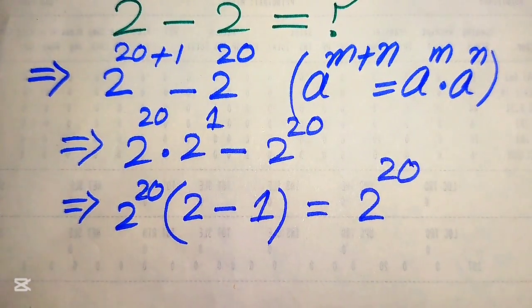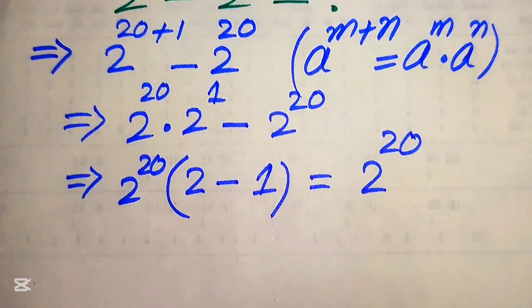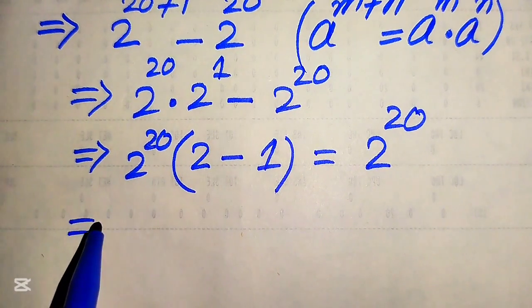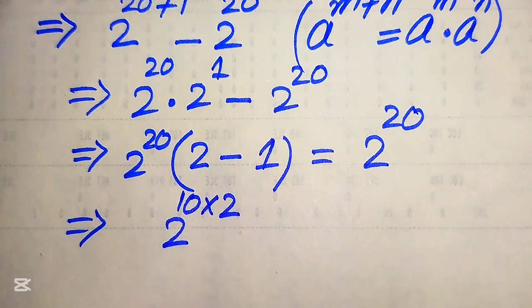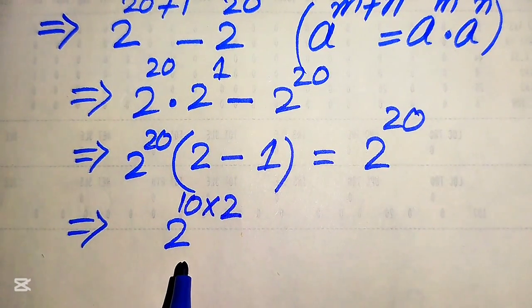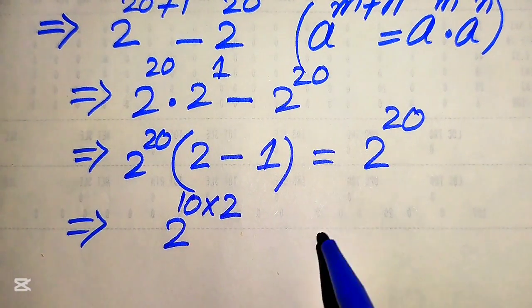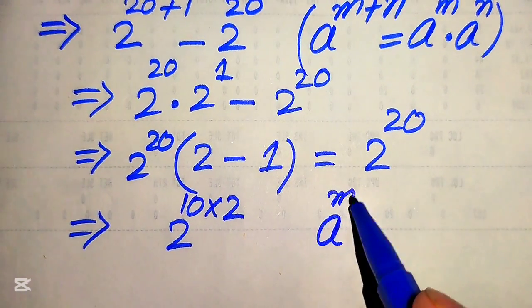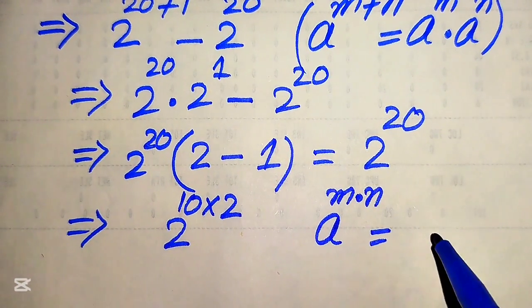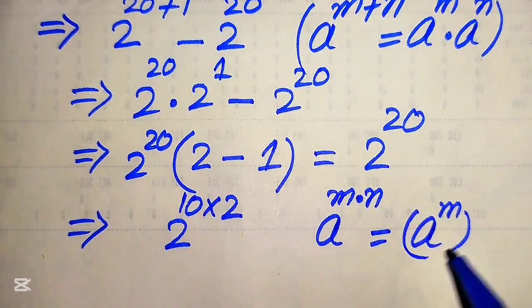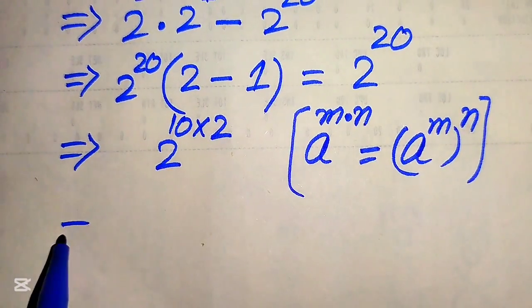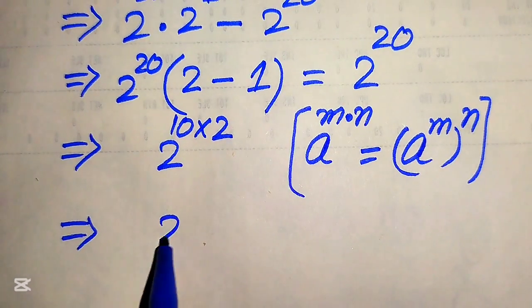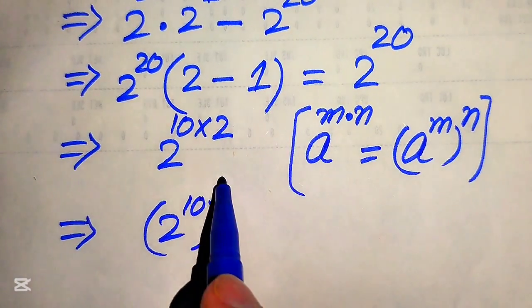Now in order to simplify our given algebraic expression, we need to find the value of 2 to the power of 20. We break 2 to the power of 20 by writing it as 2 to the power of 10 multiplied by 2 — since 10 times 2 equals 20. We again apply the exponent law: if the exponent of a number contains a product, we can write it as a to the power of m to the power of n. According to this law, we move the 10 inside and write it as 2 to the power of 10, whole square.